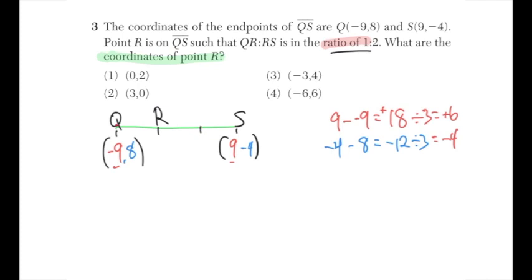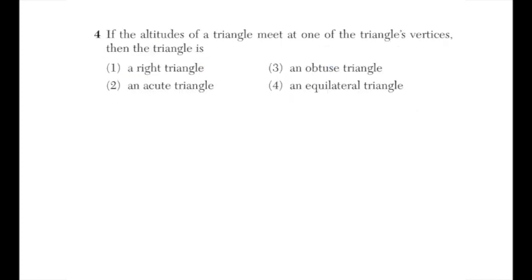Adding 6 to −9 gives −3, and subtracting 4 from 8 gives 4. So the coordinates of R are (−3, 4). That is option number three.